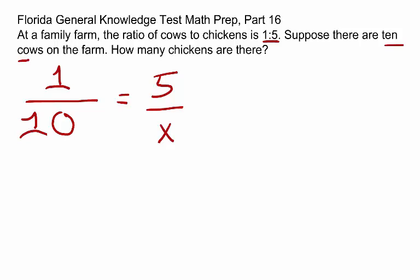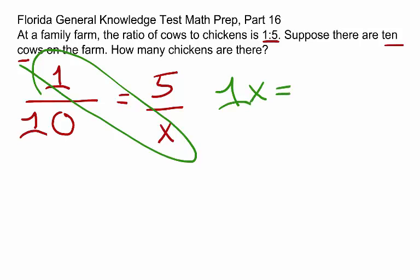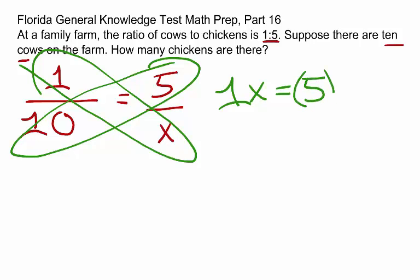Now, we can use cross multiplication, also sometimes called cross products. 1 times x equals 5 times 10.